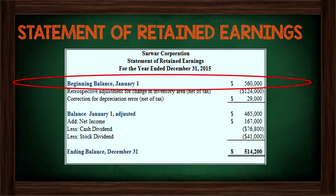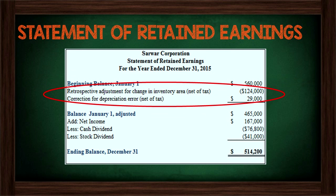The second step is where it starts to get a little bit technical. We're going to list any retrospective adjustments or corrections of errors that we found for the year. In this example, we found a retrospective adjustment for change in inventory for a loss of $124,000 and a correction for a depreciation error of $29,000. You're probably wondering why these corrections and adjustments are even presented on the statement — I'm going to try to explain the background very clearly.